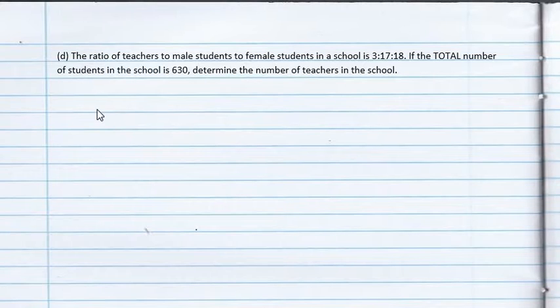Alright, so we're looking at part D of question 1, and it reads, the ratio of teachers to male students to female students in a school is 3 to 17 to 18. If the total number of students in the school is 630, determine the number of teachers in the school.